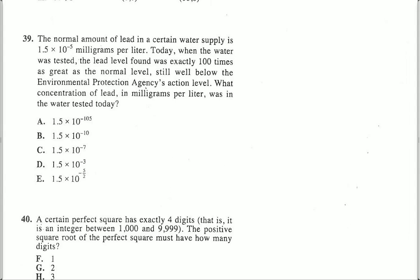Number 39. The normal amount of lead in a certain water supply is 1.5 times 10 to the negative 5 milligrams per liter. Today, when the water was tested, the lead level found was exactly 100 times as great as the normal level, still well below the Environmental Protection Agency's action level. What concentration of lead in milligrams per liter was in the water tested today?